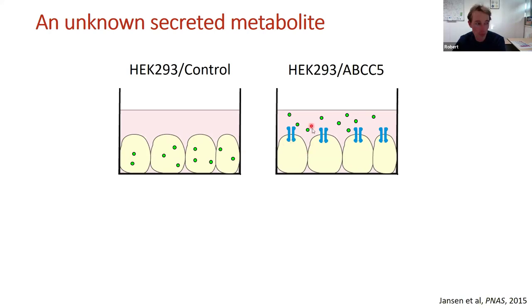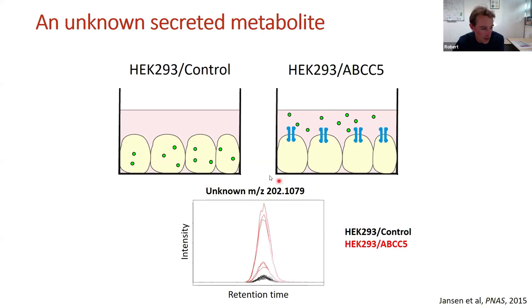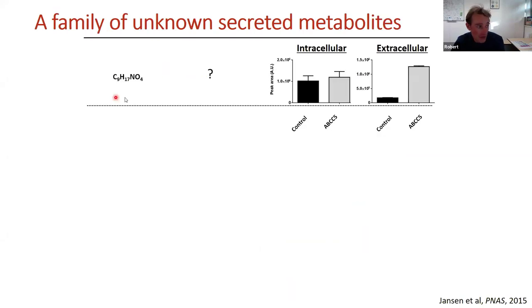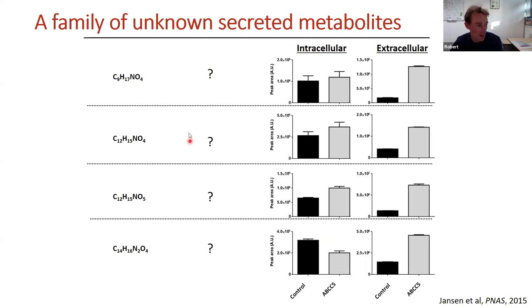While people once thought ABC transporters were mainly involved in drug resistance, it became apparent they have important physiological roles. Our aim was to use untargeted metabolomics to discover what these transporters pump across the membrane. Comparing a control cell line with low transporter levels against one overexpressing it, we found an unknown metabolite that was responsive to this transporter — quite abundant but absent from any metabolite library.